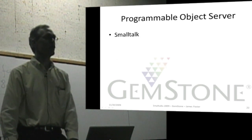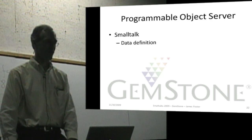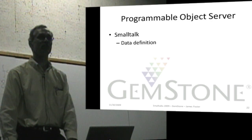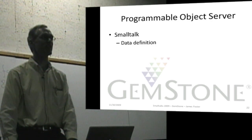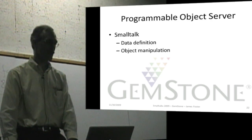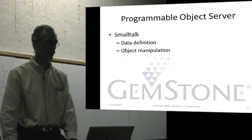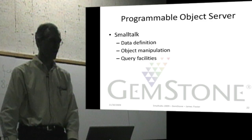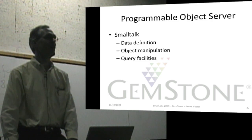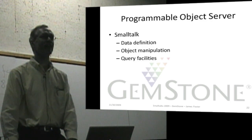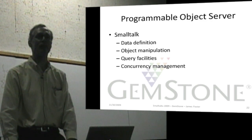The object server is programmable in Smalltalk. Data definition is Smalltalk classes — no schema definition as we have in some other systems. Object manipulation is done by sending messages to objects; this is how you interact with the object server. For query facilities, you execute Smalltalk code to select, reject, or detect objects.